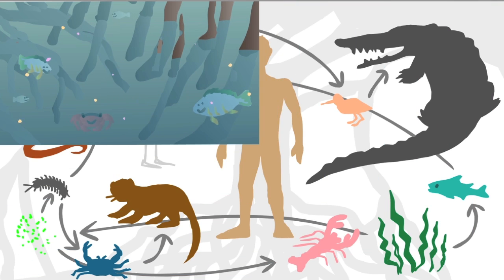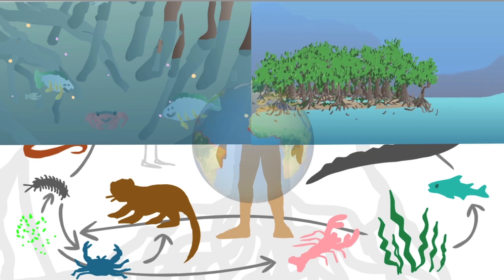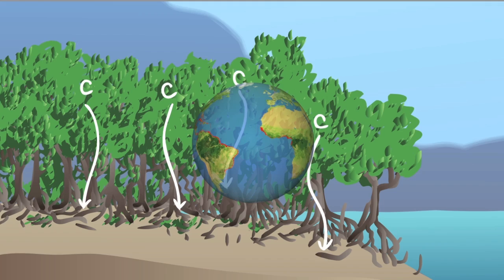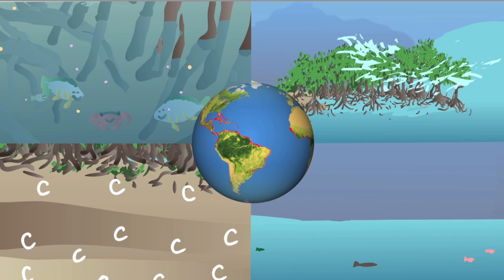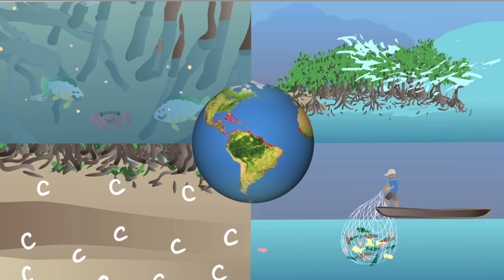Remote sensing can also reveal information about carbon sequestration, water quality, habitat composition and more. These technological advances have improved our understanding of what services mangroves provide to us, but also what we can do for them.